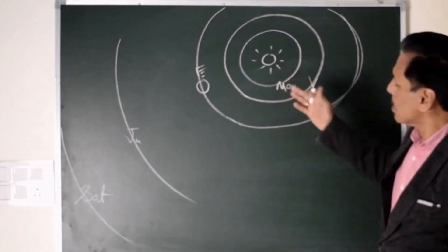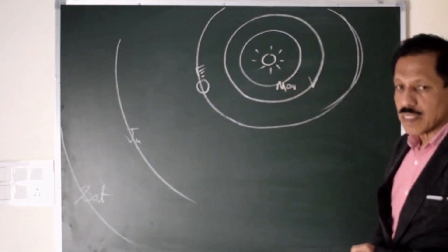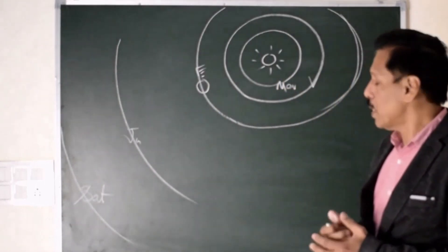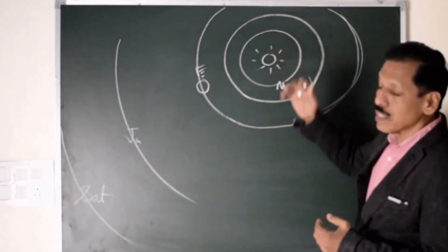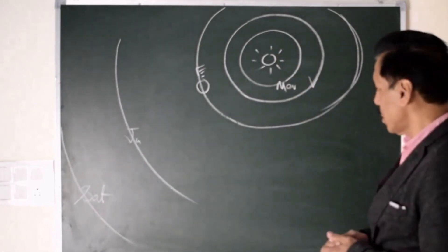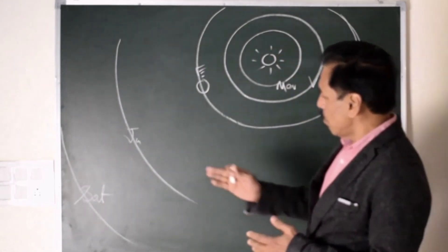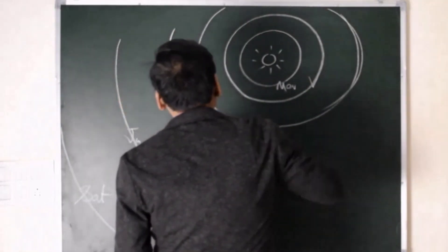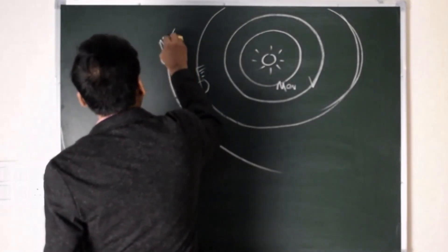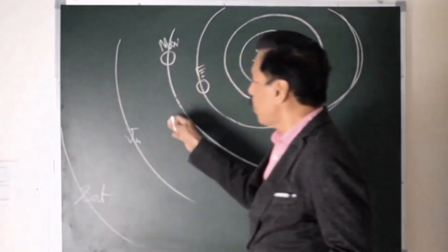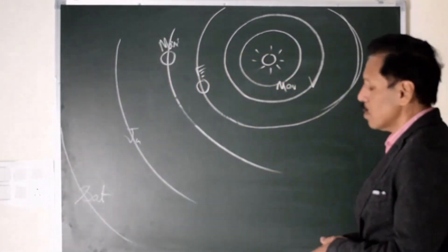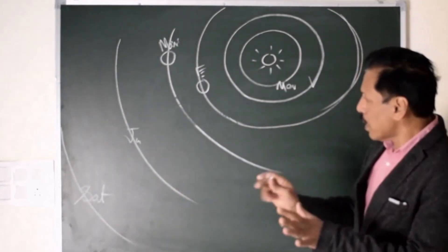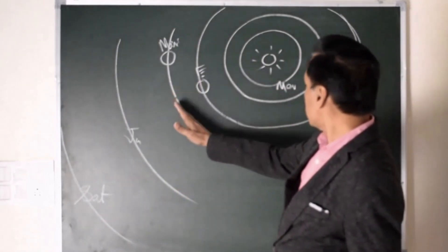These two planets Mercury and Venus have their orbits within the Earth's orbit. I mean the distance of these planets from Sun is less than Earth's Sun distance. Whereas when we talk about Saturn, Jupiter and one more important planet, that is Mars, these planets are outside the Earth. Then we have Neptune, we have Pluto. Our neighbour planets are Mars and Venus.